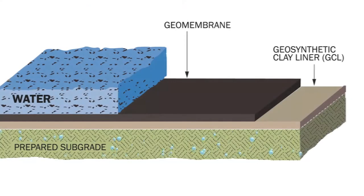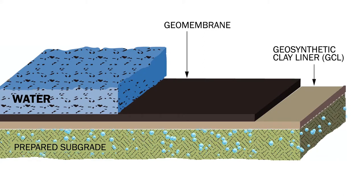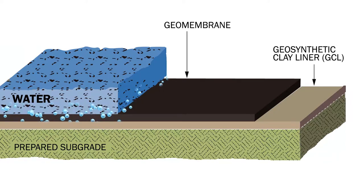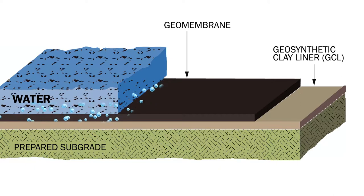Is moisture uptake after confinement the only way a geosynthetic clay liner hydrates? No. In some situations, liquid may flow to the geosynthetic clay liner from an overlying cover layer once the barrier system is put into service. The bentonite may have already hydrated from the subgrade.